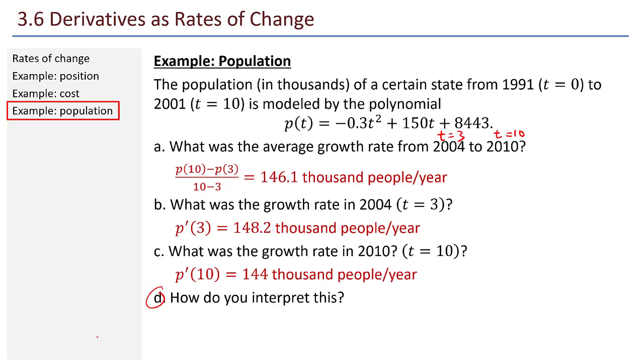And then D, how do you interpret this? So look at this. In 2004, the growth rate was 148.2 thousand people per year. In 2010, seven years later, the growth rate was 144 thousand people per year. Both of those numbers are positive. The population in this state is growing, but look what's happened. It has decreased from 148.2 down to 144. So even though the population of this state is increasing, the rate of increase, the rate of growth, is dropping. Population is increasing, but the rate of growth is dropping. And finally, it should also make sense that the average is somewhere in between those two numbers.